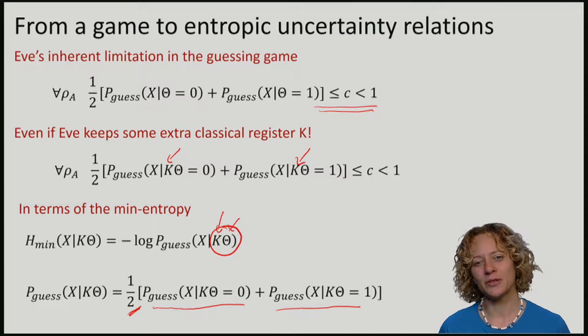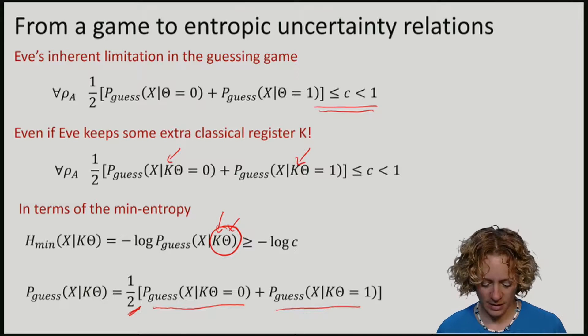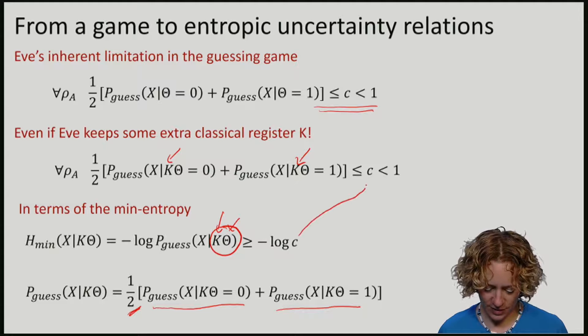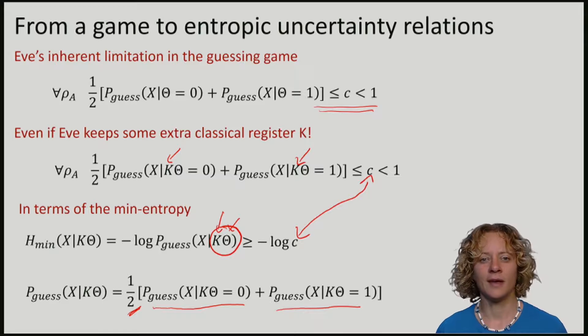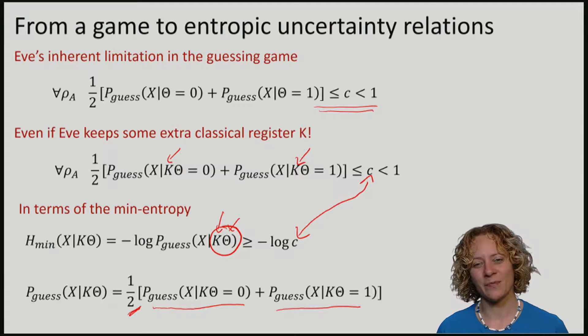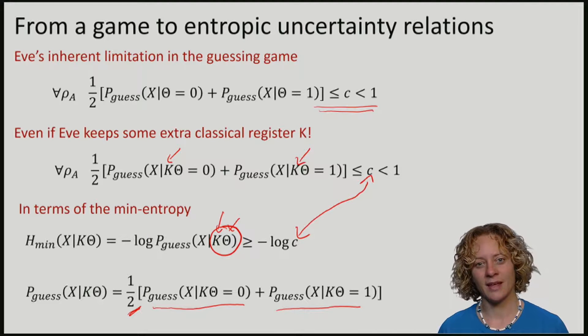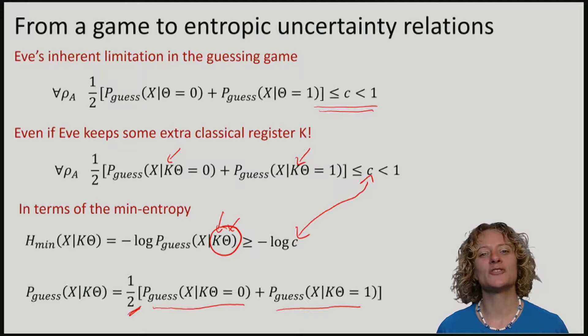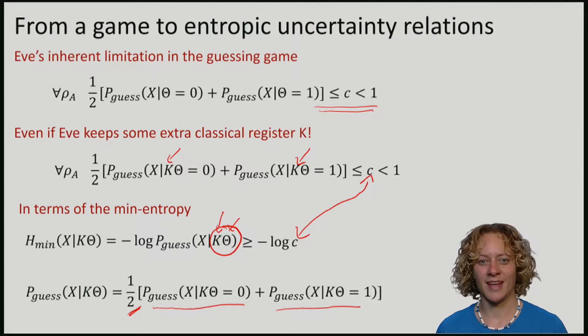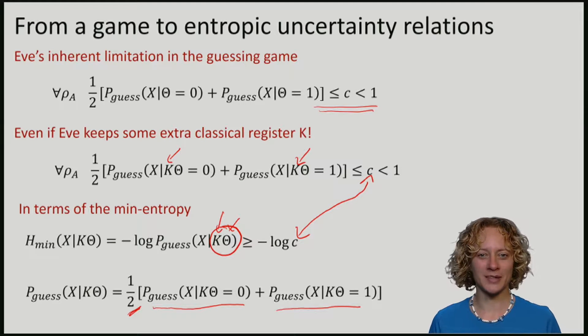With this we see that we could have written this uncertainty relation in terms of a lower bound on the min entropy. So the C is just the C from up here. An upper bound on the guessing probability can thus be turned into a lower bound on the min entropy. This way of writing down uncertainty is known as an entropic uncertainty relation, and in the lecture notes you can find some pointers to the literature where you can read all about such relations.